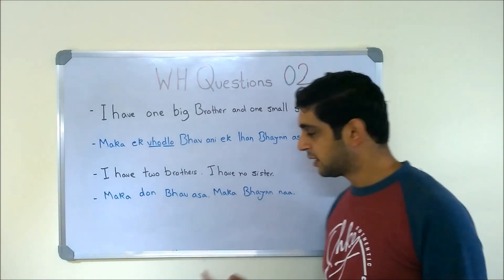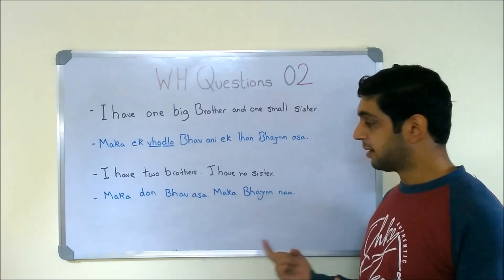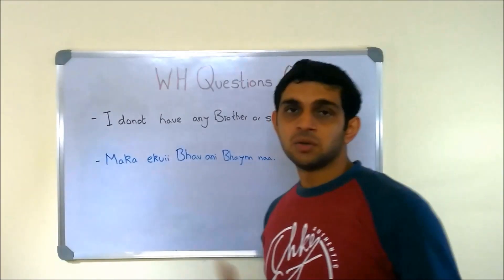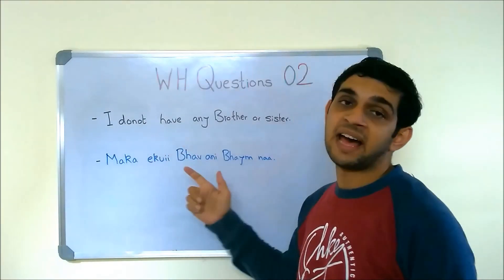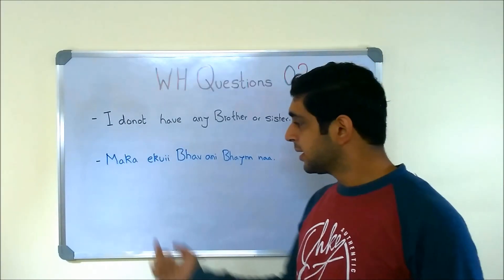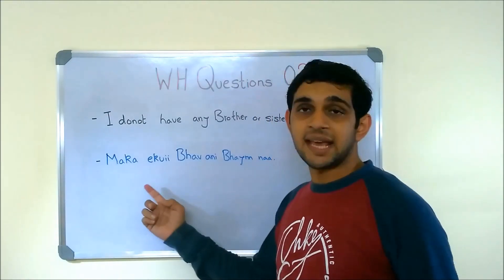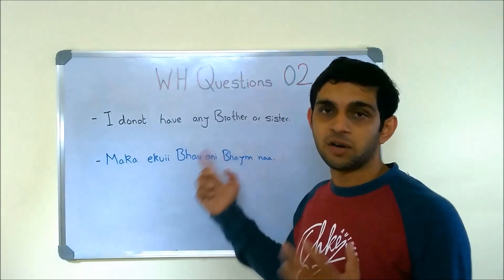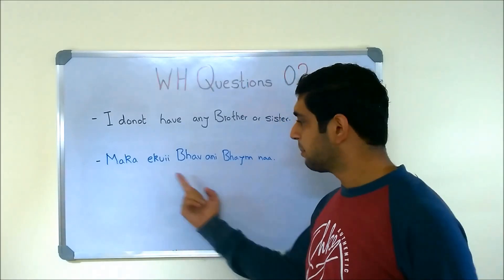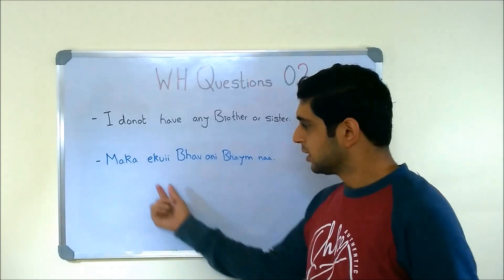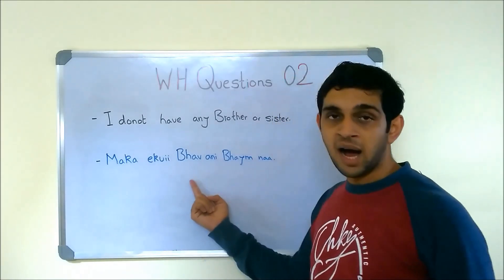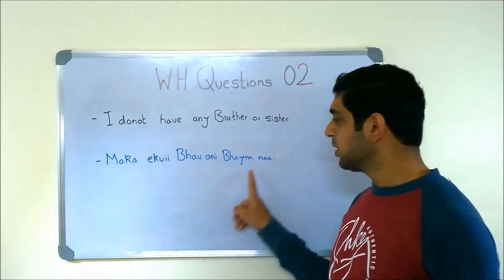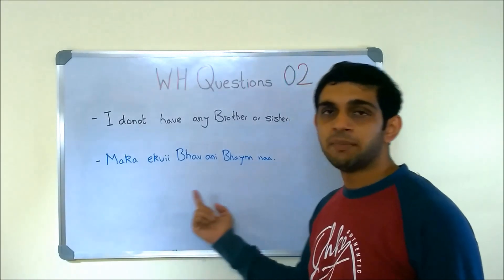MAKA EK BHAAV ASA, MAKA BHAIN NA — BHAIN is 'sister', NA is 'no'. The last type of answer could be 'I do not have any brother or sister'. The answer would be: MAKA EKUI BHAAV ANI BHAIN NA — EKUI NA means 'not even one'. So EKUI NA is 'not even one': MAKA EKUI BHAAV ANI BHAIN NA.